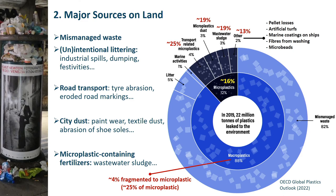Another 25% is coming from road transport, with tire abrasion accounting by far most of this, but also including road markings or brake wear. About 20% is so-called microplastic city dust from the abrasion of shoe soles, paint wear from surfaces or losses from construction activities and household textile dust. Accidental losses of primary pellets, abrasion of artificial turf, losses of synthetic fibers, and microbeads in cosmetic products play a less important role.